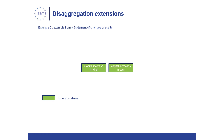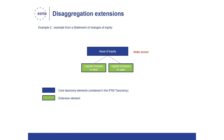This principle can be further illustrated with an example from the ESEF reporting manual. A preparer issued equity and received one part of the capital increase in-kind and another part in cash, disclosing the two components separately in its statement of changes of equity. The ESEF taxonomy includes an element issue of equity, but it does not include separate elements for capital increases in-kind and capital increases in-cash. Therefore, the issuer creates extension taxonomy elements for capital increases in-kind and in-cash, which are narrower in scope than issue of equity and represent disaggregations of it. The two extension elements are therefore anchored to the wider base taxonomy element issue of equity.